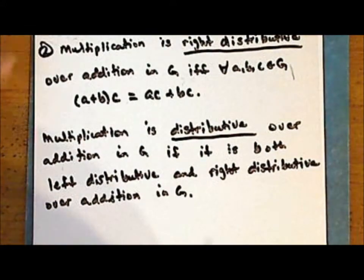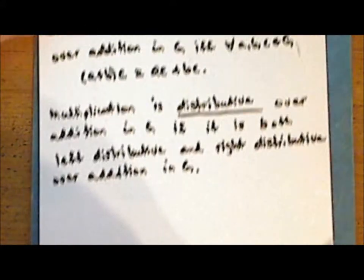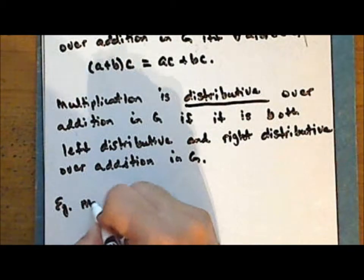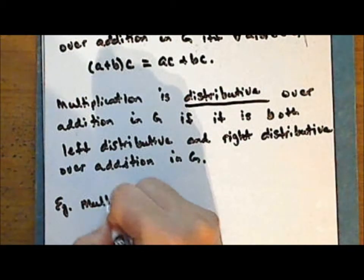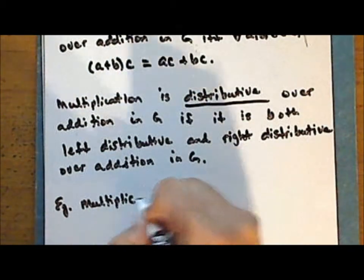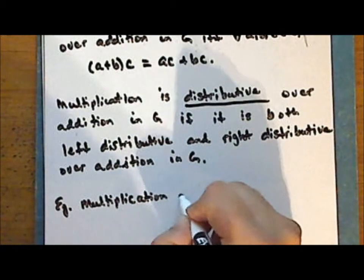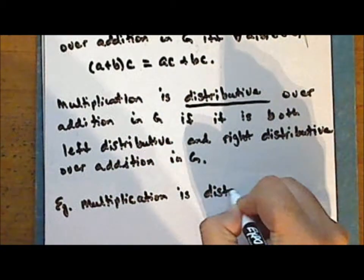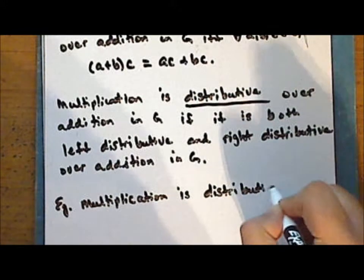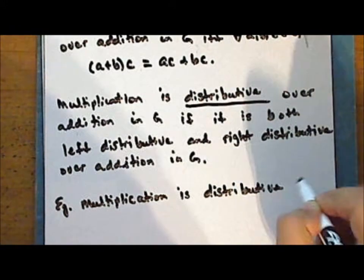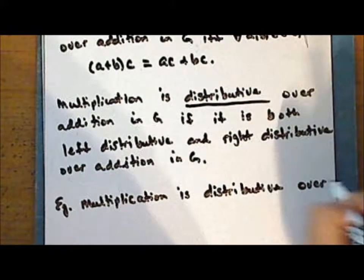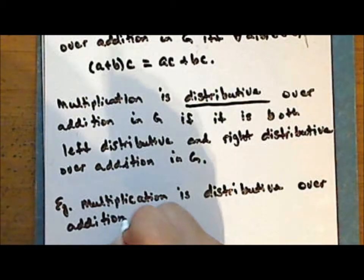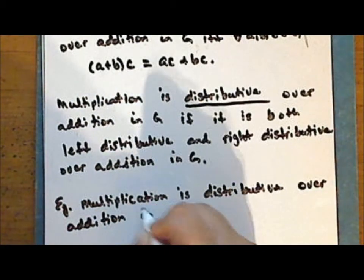And multiplication is distributive over addition in the set g if it is both left distributive and right distributive over addition in the set g. So next we will demonstrate that multiplication is distributive over addition in the integers.